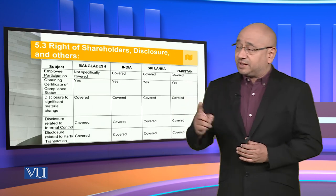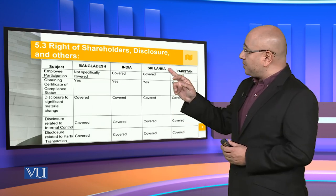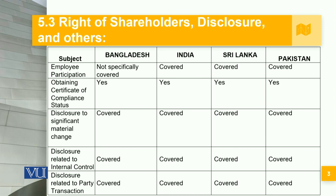Moving a little bit ahead in the comparison: employee participation is not specifically covered in Bangladesh, but adequately covered in India, Sri Lanka and Pakistan. Obtaining a certificate of compliance status is affirmative across all four countries. Disclosure of significant material change is covered across Bangladesh, India, Sri Lanka and Pakistan. Disclosure related to internal control is the same across all four countries and is adequately covered. Disclosure related to party transactions is also adequately covered between all four countries.